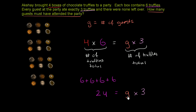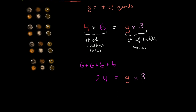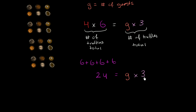So what times three is equal to 24? If G times 3 equals 24, that means 24 divided by 3 must equal G. If I divide these 24 truffles into groups of 3 — three for each guest — the number of groups will tell me the number of guests.